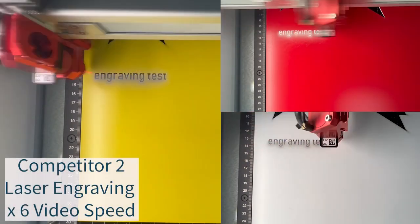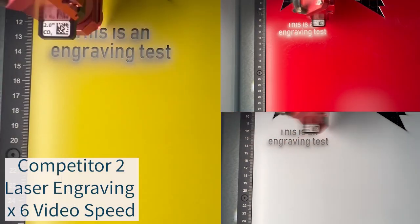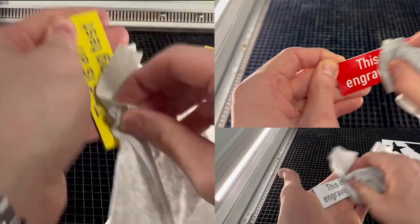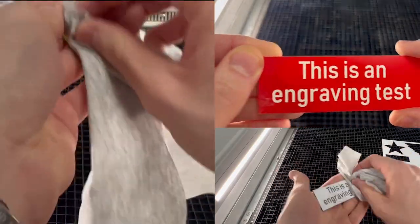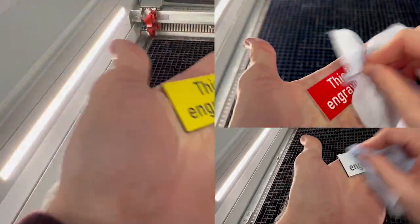Whilst not as bad as competitor one, competitor two still produces significantly more dust and debris than Trotec. Again a wet wipe is required in addition to a dry cloth to completely clean the material.